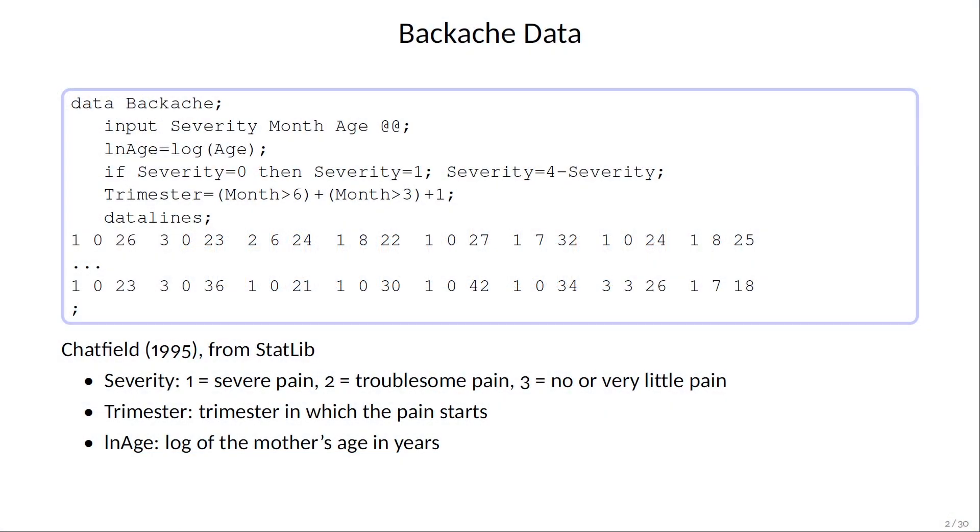The data are collected from pregnant women reporting back pain. Their responses are in the severity variable, where smaller values indicate more severe pain. The predictors found by Chatfield are trimester, a categorical variable, and log of age, a continuous variable. Since the response has three response levels that are ordered, we'll try fitting a proportional odds model.